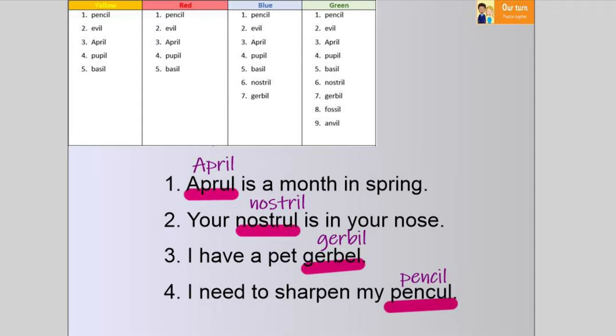So for example, the word April, it sounds like it's got that uh sound at the end, which would normally be written with the letter U, but it should actually be spelled IL. Same with the other examples as well. Well done.